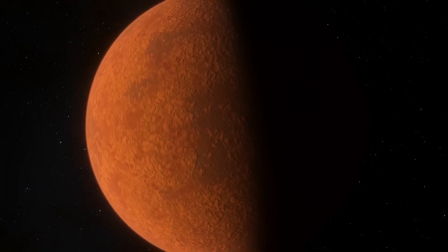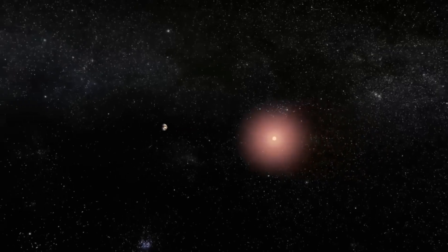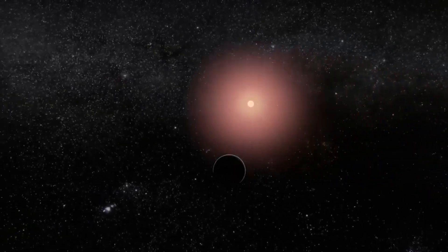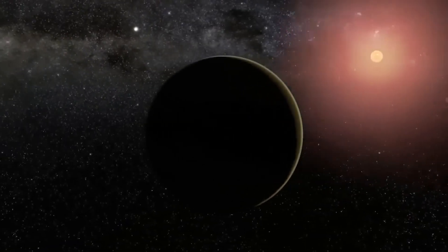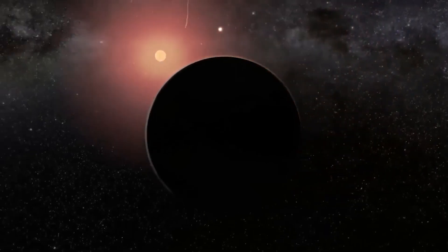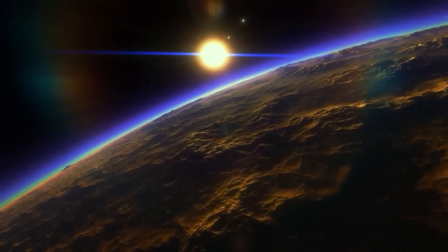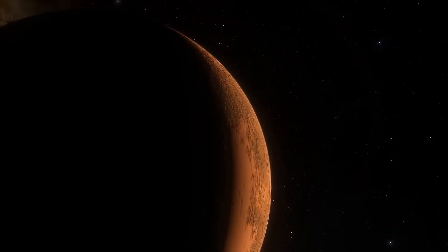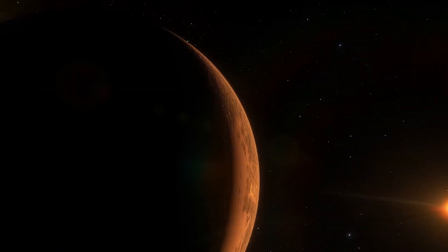Proxima b, orbiting the closest star to our solar system, has long captured the imagination of scientists and dreamers alike. But while its illuminated side has been a topic of intense study, its dark side, permanently locked in shadow, remained an enigma.